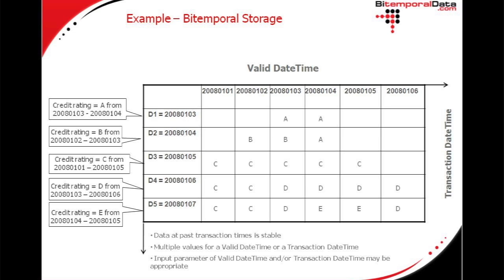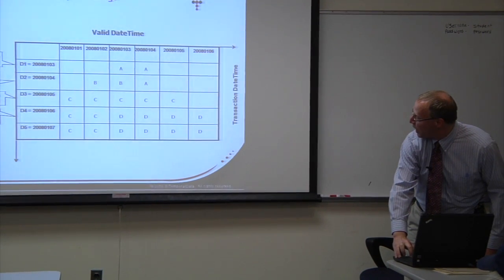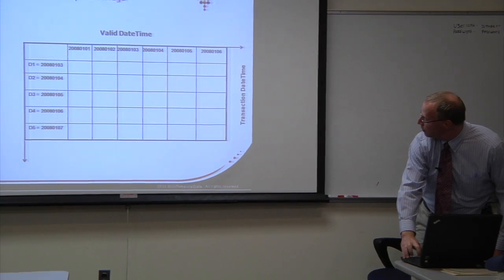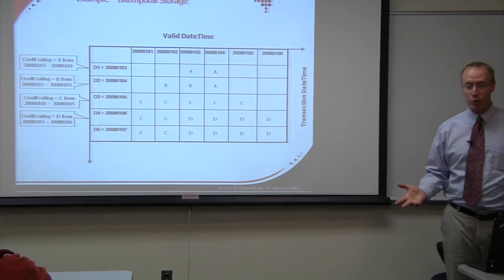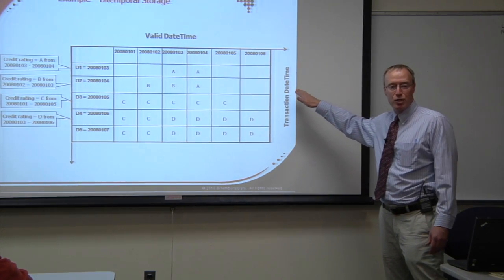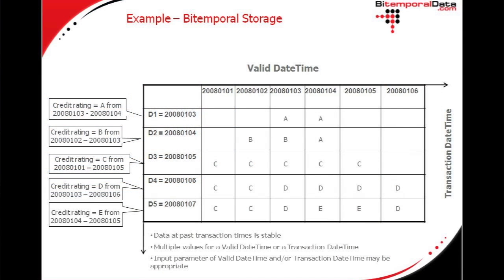A couple of things important to note about bitemporal data population: as we went through here, you may have noticed that the past transaction rows are stable. Once we get past a transaction time, the previous rows never change — that's an important characteristic of bitemporal data. You can count on the data for a given transaction time being stable. Also note there are multiple values for a given valid date-time or transaction date-time, which means it would be appropriate to query this information with an input parameter of either the valid date-time, the transaction date-time, or both, because it varies along both dimensions of time.